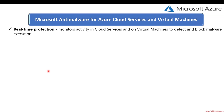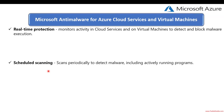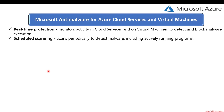When you deploy and enable Microsoft Anti-Malware for Azure, the following core features are available. The first is real-time protection, which monitors every activity within cloud services and virtual machines, detecting and blocking malware execution automatically. The second is scheduled scans, which periodically detect malware including actively running programs via quick scan or full scan.